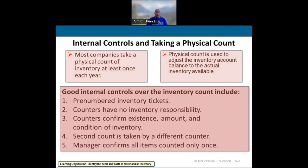One of the aspects we want to go over in chapter 6 is internal controls. We want to track our inventory and keep a good handle on what it's doing — making sure we account for it, know how much is in there, and what it's valued at. Some controls include using pre-numbered inventory tickets, so someone can't go in and fudge numbers or void a ticket without someone knowing. You also want people who have nothing to do with inventory to go count it, with several people counting the same items, and then a manager doing a spot check.